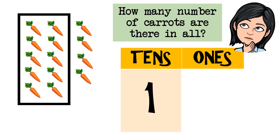Now, let's count the remaining carrots. One, two, three, four. We have four remaining carrots, or four ones. Therefore, we have fourteen carrots in all.